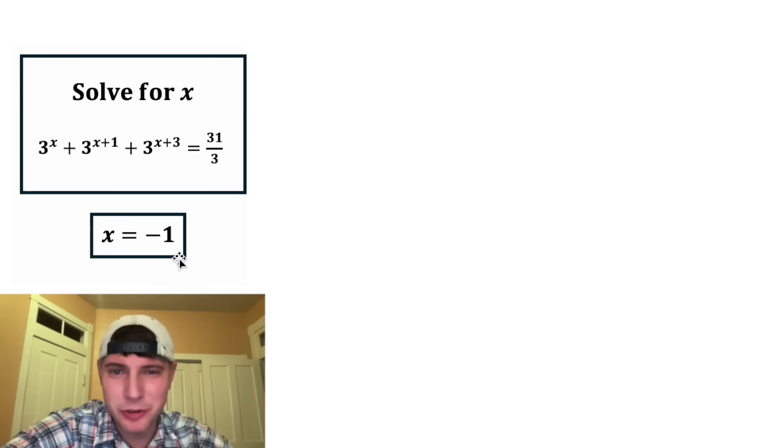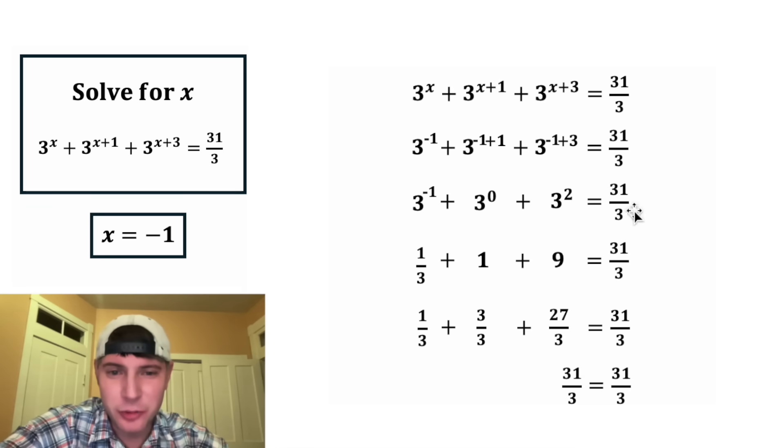I'm a little disappointed that it's not some crazy answer, but on a positive note, it'll be easy to check. Here's all the work right here. So we just plugged in negative one for all the x's and it simplifies out to 31 thirds equals 31 thirds. So x equals negative one works.